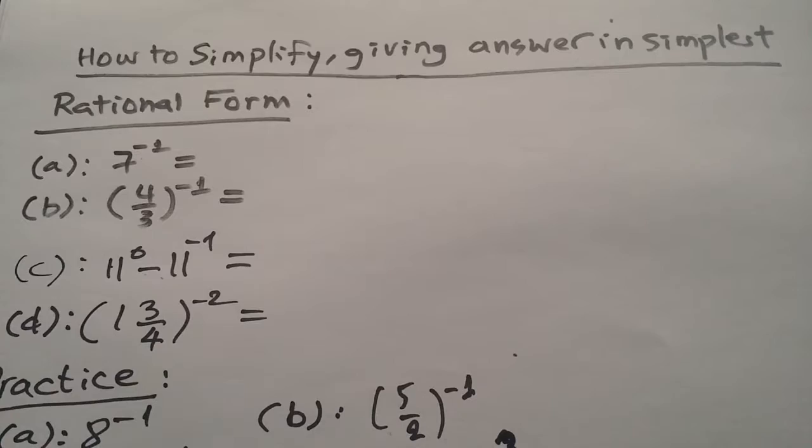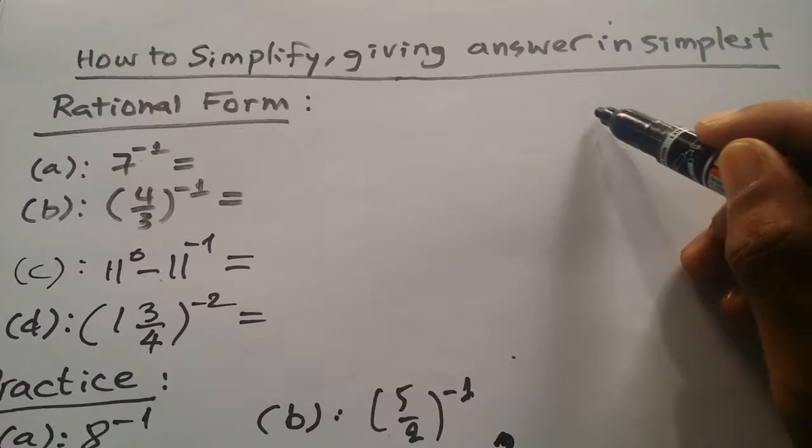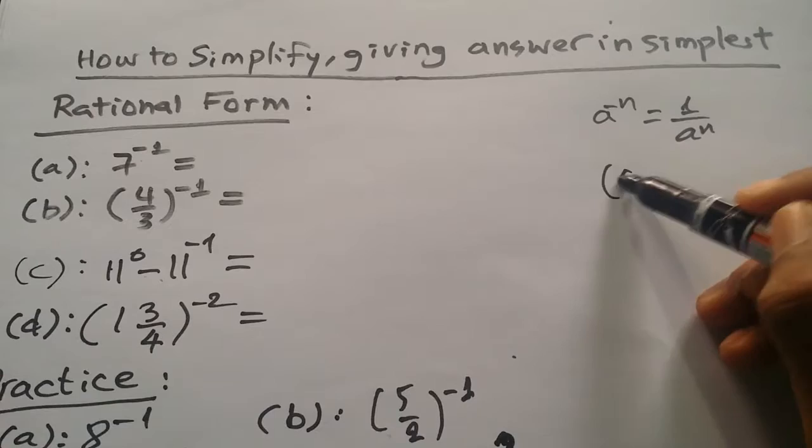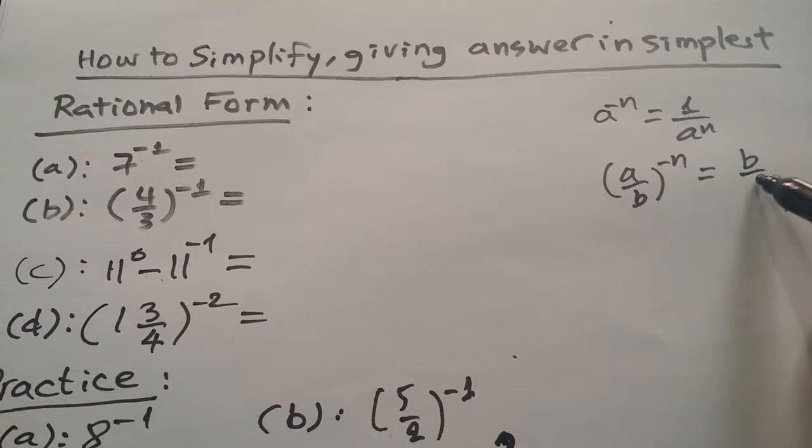We use the formula: a divided by n. Remember the formula — a divided by b to the power minus n. We can write it as b to the power n divided by a. This is the formula.